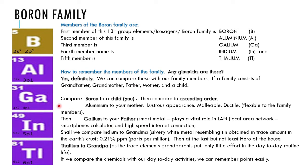How to remember the boron family members in order? We can use a family analogy. Assume a single-child family: boron is you — a non-metal, shown in a different color from the rest. The other members — aluminium, gallium, indium, thallium — are all metals.